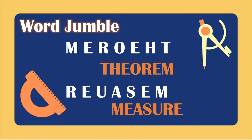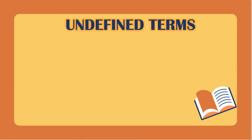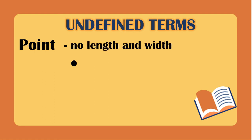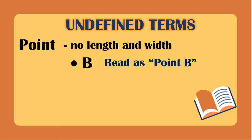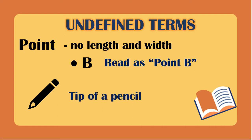The first part of the mathematical system is about undefined terms — these are terms that cannot be defined but have characteristics and can be described. The first undefined term is the point. It has no length and no width, meaning it has no dimensions. We denote a point using a capital letter, for example point B. A real-life example of a point is the tip of a pen or pencil.